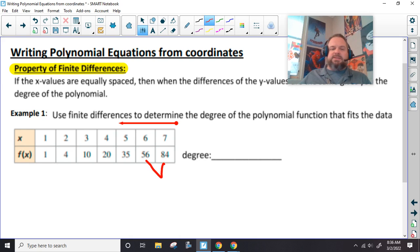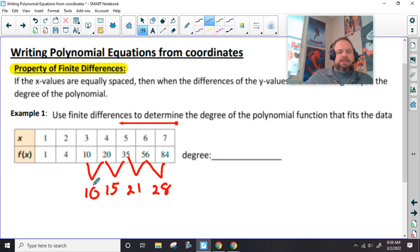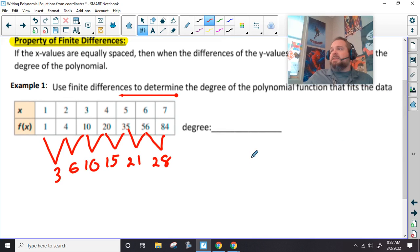Because that's what the property of finite differences means. All right. So, first, we would say 84 minus 56. We get 28. We're going to say 56 minus 35. It's 15, 10, 6, and 3. All right. None of these match. They shouldn't. Because if they did, it's a linear.